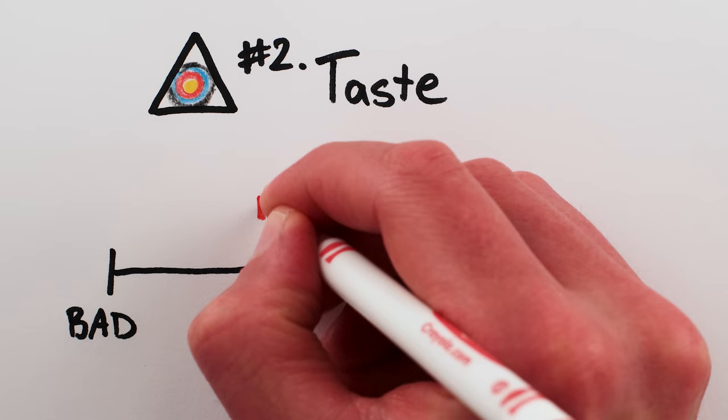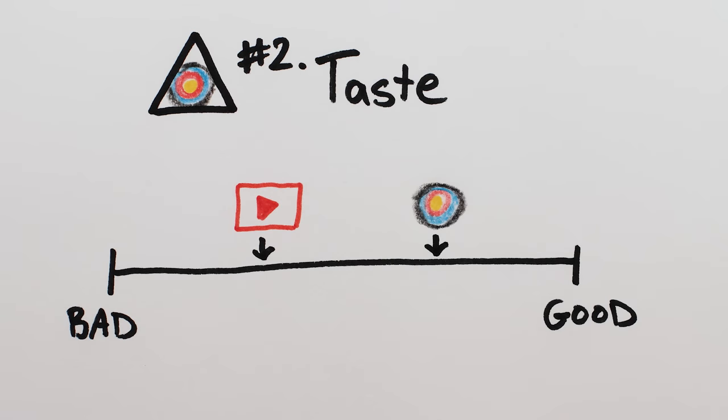Personal viewpoints are where the second part of the trinity comes in. Taste, also known as preference. If quality is where you are, taste is the target, where you want your creation to be on the quality axis.